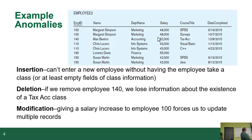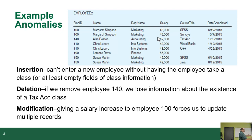Deletion: if we get rid of Alan Beaton, employee 140 — Alan Beaton was found cooking the books, so we're going to let him go. We delete Alan Beaton out of this table. What happens is we're going to lose the fact that tax accounting was ever a course, because tax accounting is nowhere else in here. If we delete Alan Beaton, we're going to lose the course called tax accounting also. That's a deletion anomaly — it means we're deleting something that has nothing to do with what we're actually deleting; it's just going away with it.